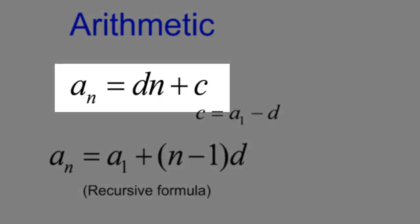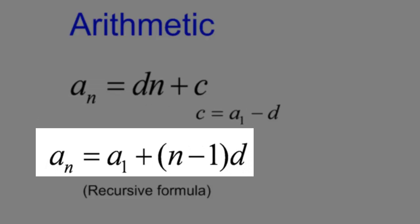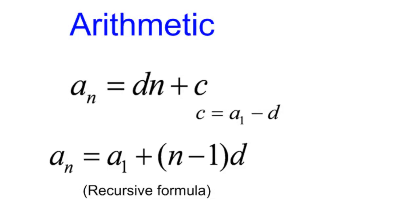So someone in class mentioned that a sub n equals dn plus c is kind of like mx plus b form or slope intercept form. And then a sub n equals a sub 1 plus n minus 1 times d is kind of like point slope. So arithmetic really has some linear application.